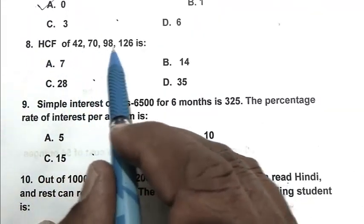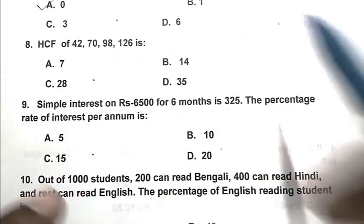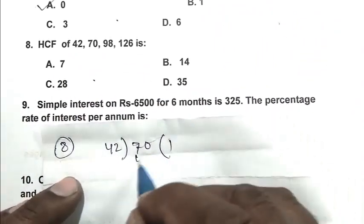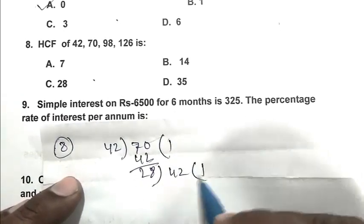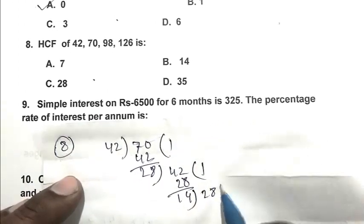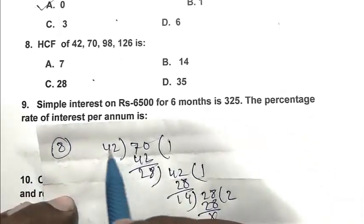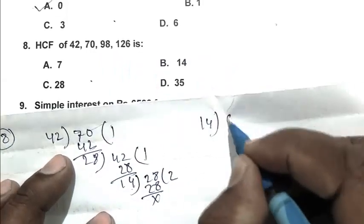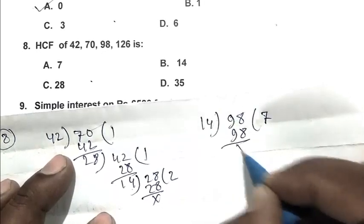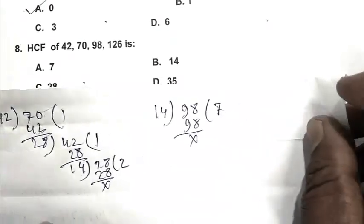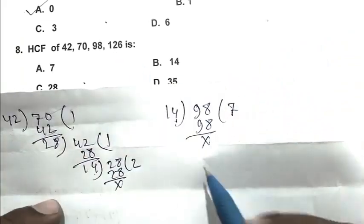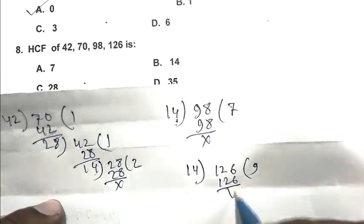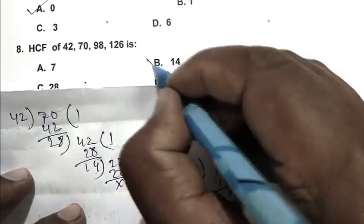Question number 8: HCF of 42, 70, 98 and 126 is. So first we take the HCF of 42 and 70. HCF of 42 and 70 is 14. After that we take the HCF of 14 and 98. After that we take the HCF of 14 and 126. So HCF of all the numbers is 14. So B is the right answer.